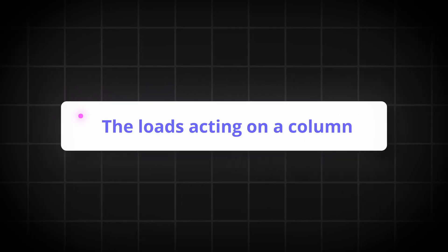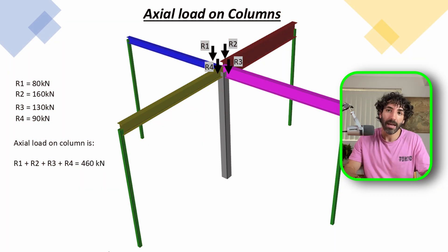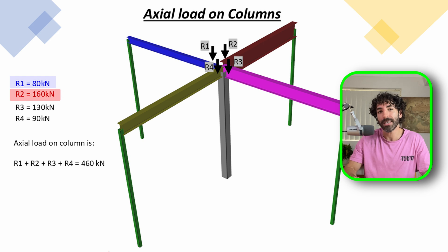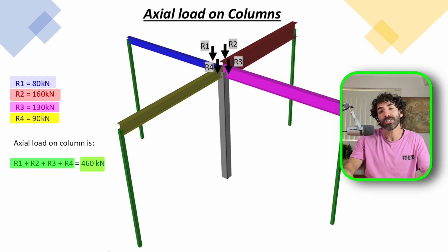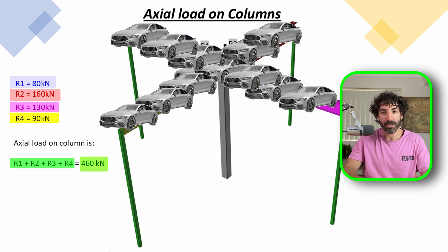Let's talk about the loads acting on a column. The compression load is simply the total of the reactions from the beams connected to the column. In this example, the blue beam has a reaction of 80 kilonewtons, the red beam is 160 kilonewtons, the pink beam 130, and the yellow beam is 90 kilonewtons. When we add them all up, we get 460 kilonewtons — that's like stacking 46 small cars on top of your column — meaning our goal is to design this column so it can safely carry more than 460 kilonewtons in compression.